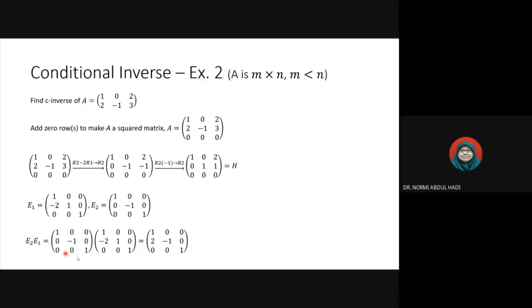B is E2·E1. Since A is 2 by 3, AC will be 3 by 2. We truncate the other elements, so we only need 3 rows, 2 columns. That is C, the conditional inverse of A.